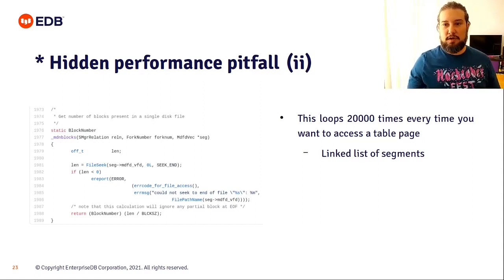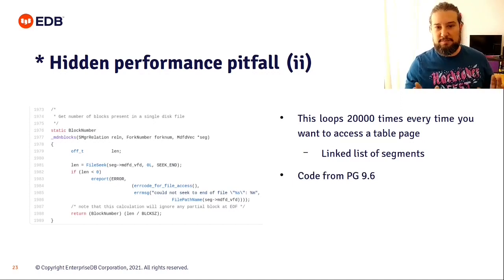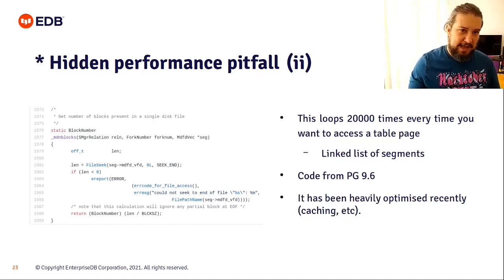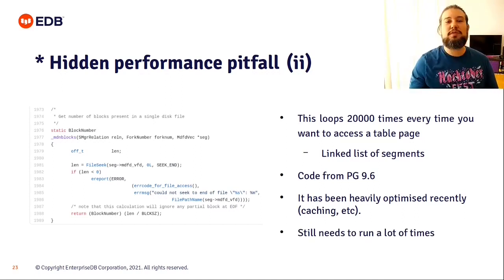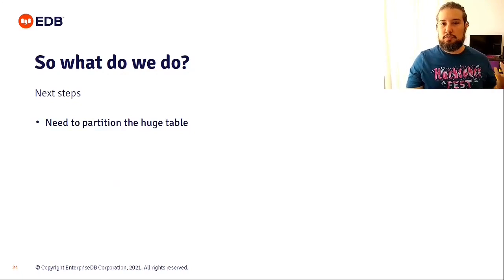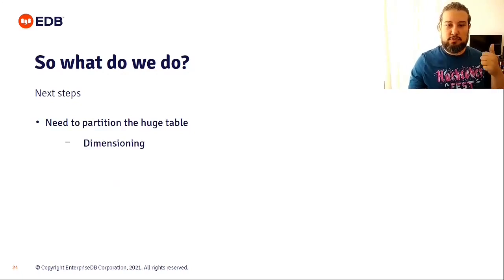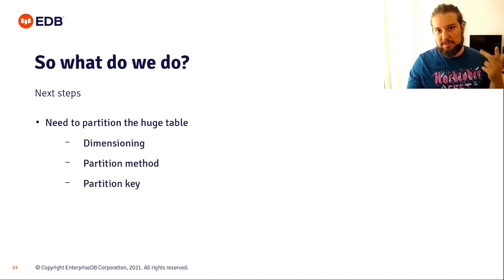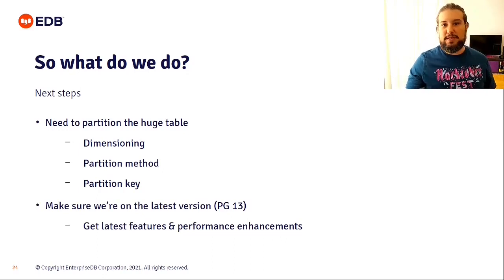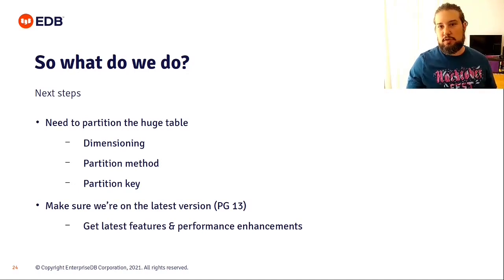This code from Postgres 9.6 has been recently optimized with caching and other improvements, but it still needs to run 20,000 times for your table. The next steps to partition our huge table are: perform dimensioning, choose a partitioning method and partitioning key, and make sure you're on the latest version to get the latest partitioning-related features and performance enhancements.